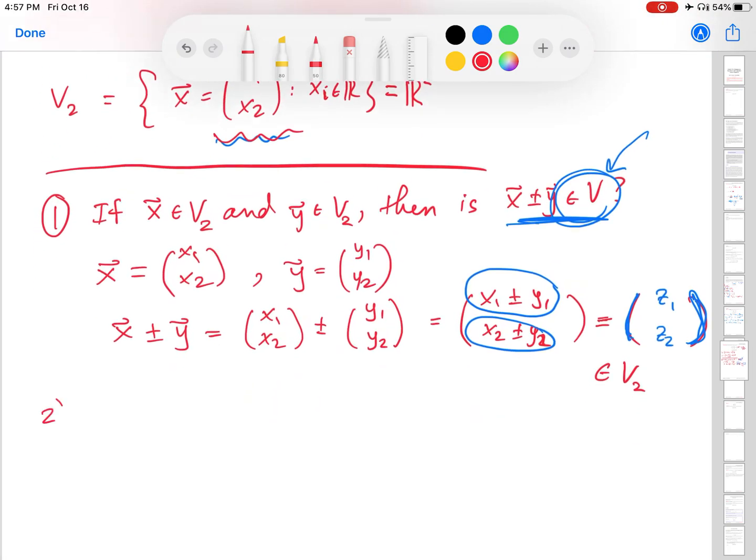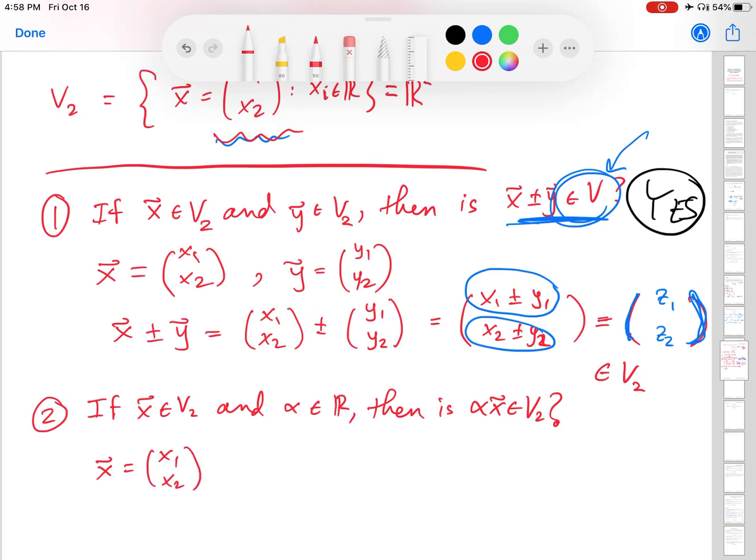So the answer is yes, the first axiom is satisfied. How would I go about checking the second axiom? The second axiom says, if the vector is in the space and alpha is a real number, is alpha times the vector in the space? Similar thing: I am going to start off with my vector in the space and alpha, any real number.